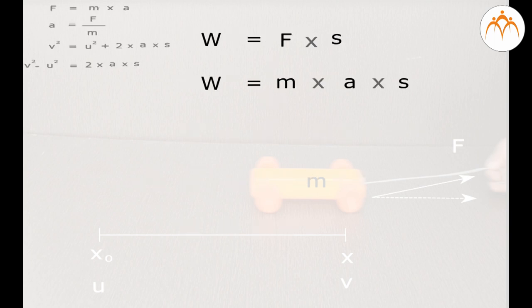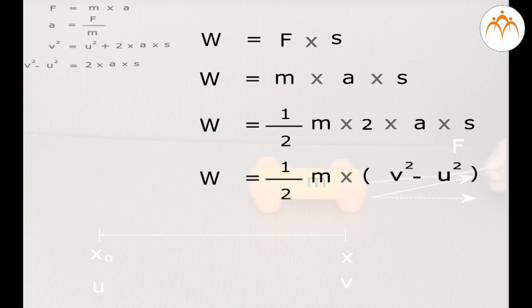Substituting for Newton's second law, we have work equals ma times s. But remembering equation 3, let us multiply by 1 and write the 1 as half times 2. Now we can substitute for 2a times s with just v squared minus u squared.